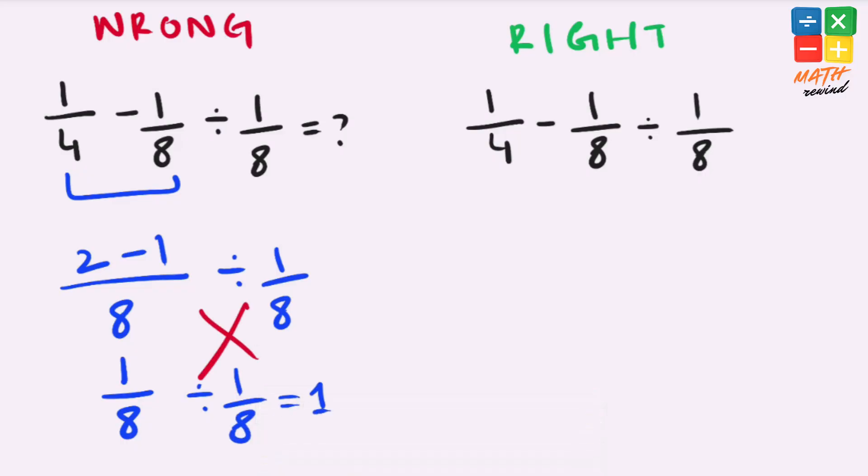But this answer is not right because according to the order of operations we have to solve this division first, because that takes priority over subtraction. So we must solve this division first.